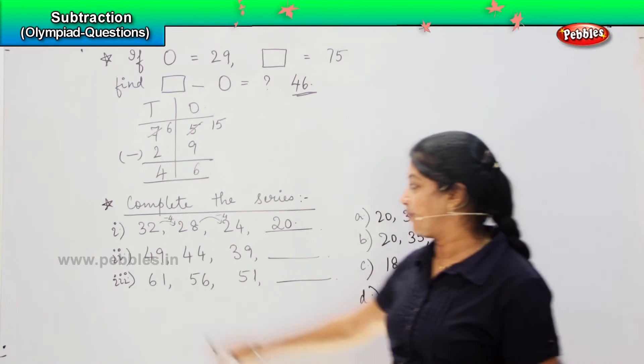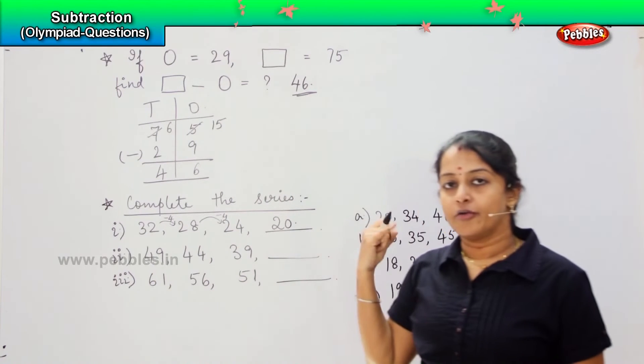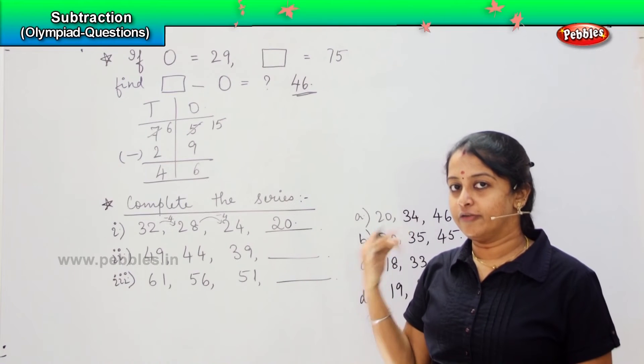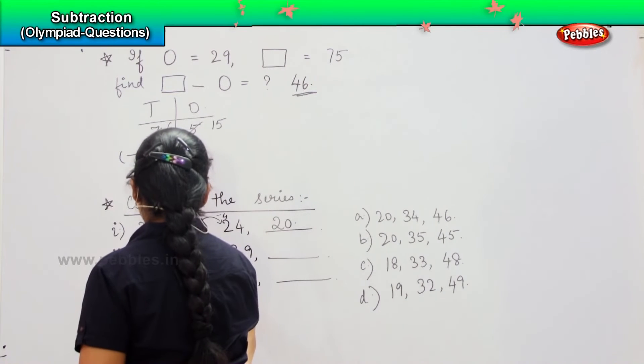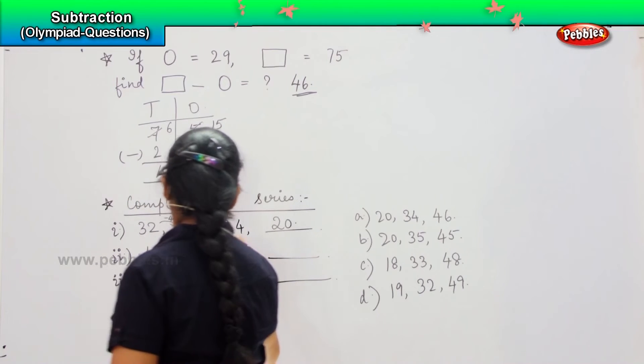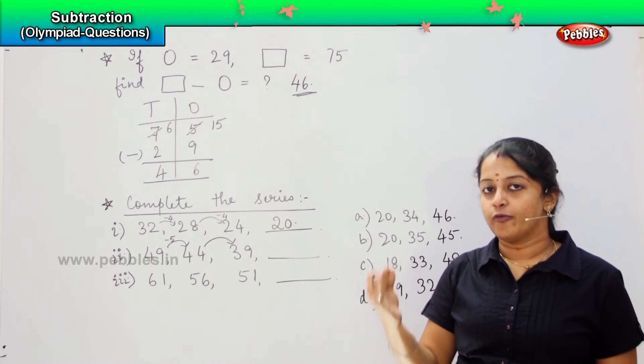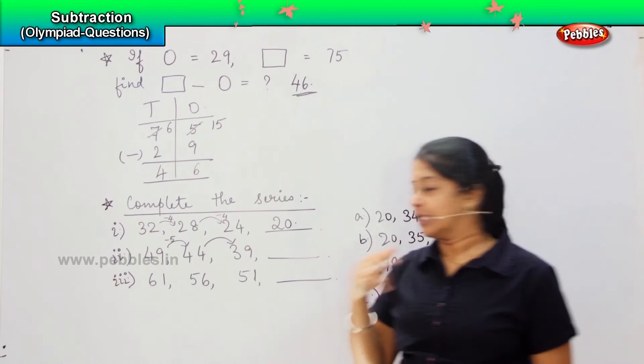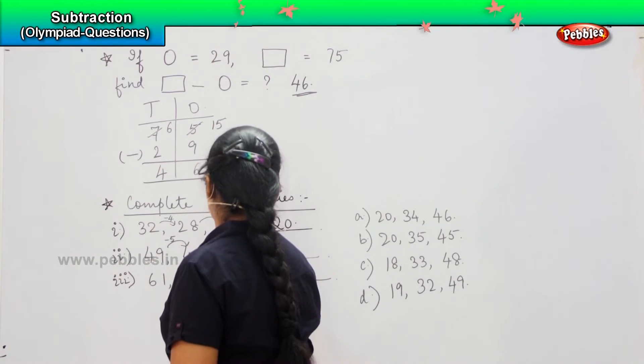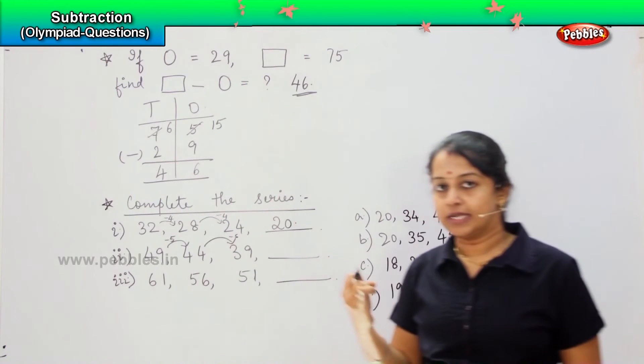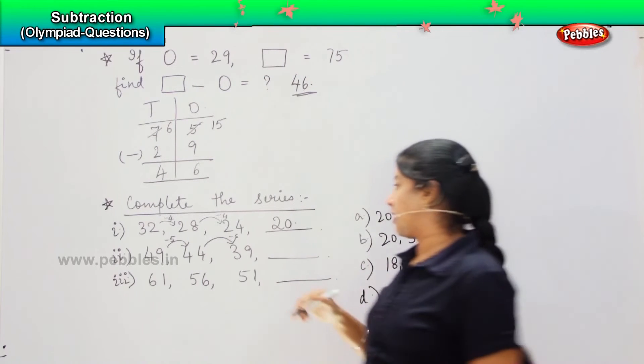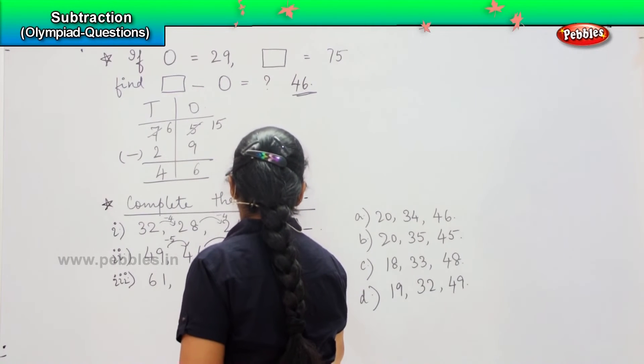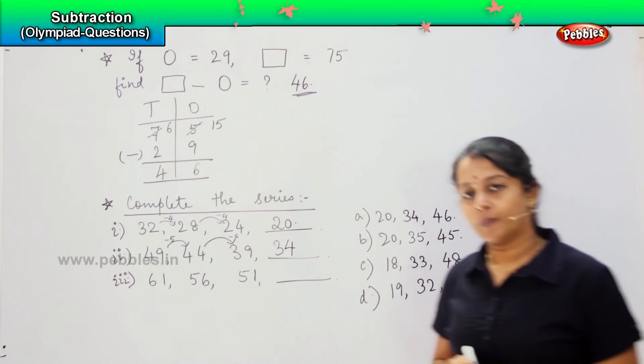Coming to the next one. 49 to 44, which means it is minus 5. Again from 44 to 39, minus 5. Then here, 38, 37, 36, 35, 34. Very good. So it will be 34.